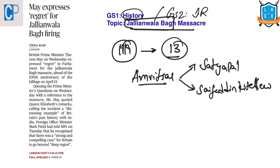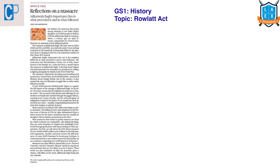Colonel Reginald Dyer had announced a curfew and a ban on all processions, prohibiting even a group of four or more people from meeting publicly. He sensed people gathering for a meeting and arrived with his armed troops, ordering them to open fire, resulting in extreme mass killing.